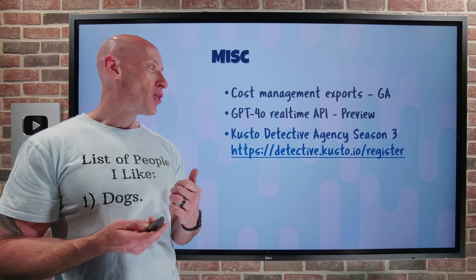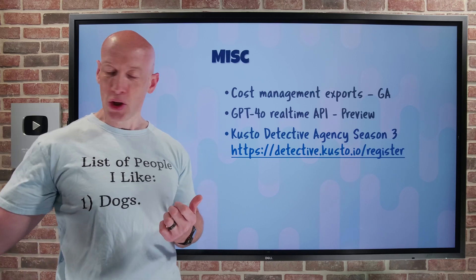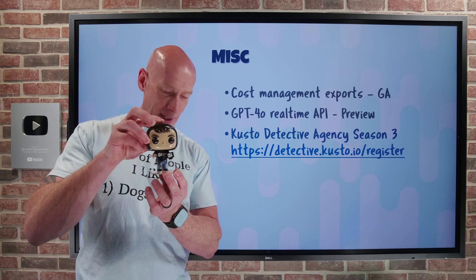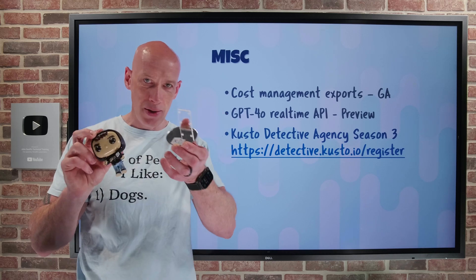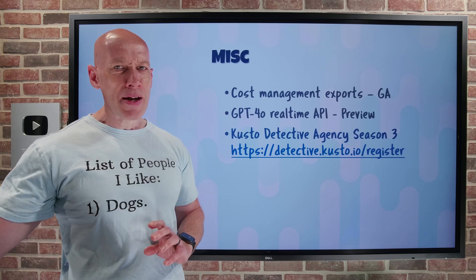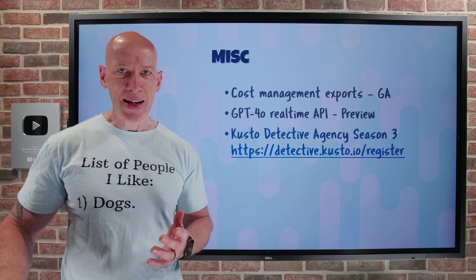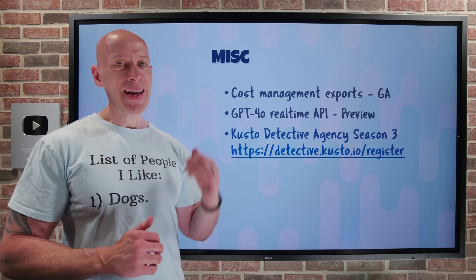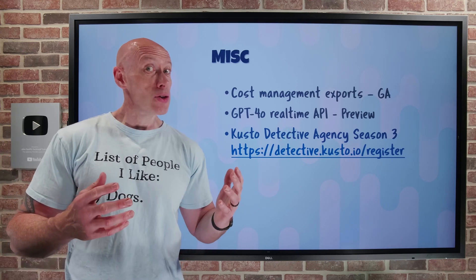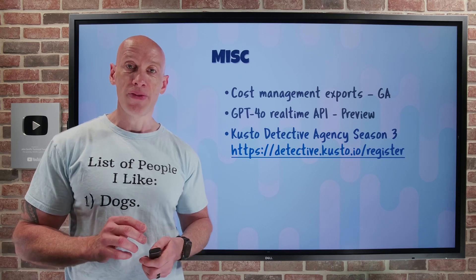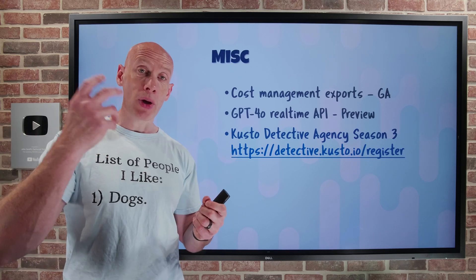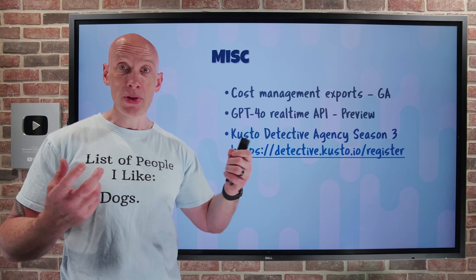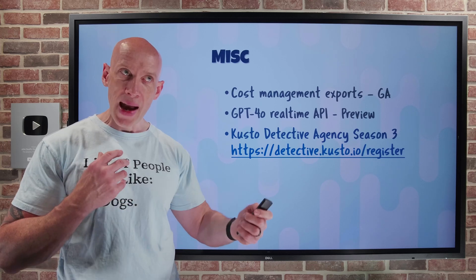And a bit of fun — the Cousteau Detective Agency Season 3.0 kicks off on June 8th. They even sent a little Cousteau figure. It's described as intense, fast-paced, and epic, with the Season 3 tagline 'Call of the Cyber Duty.' You can register for free, and if you succeed, you get added to the Cousteau Detective Agency Hall of Fame. It's a great way to learn about Cousteau and increase your skill sets, since more and more technologies today use KQL as a core part of interaction.